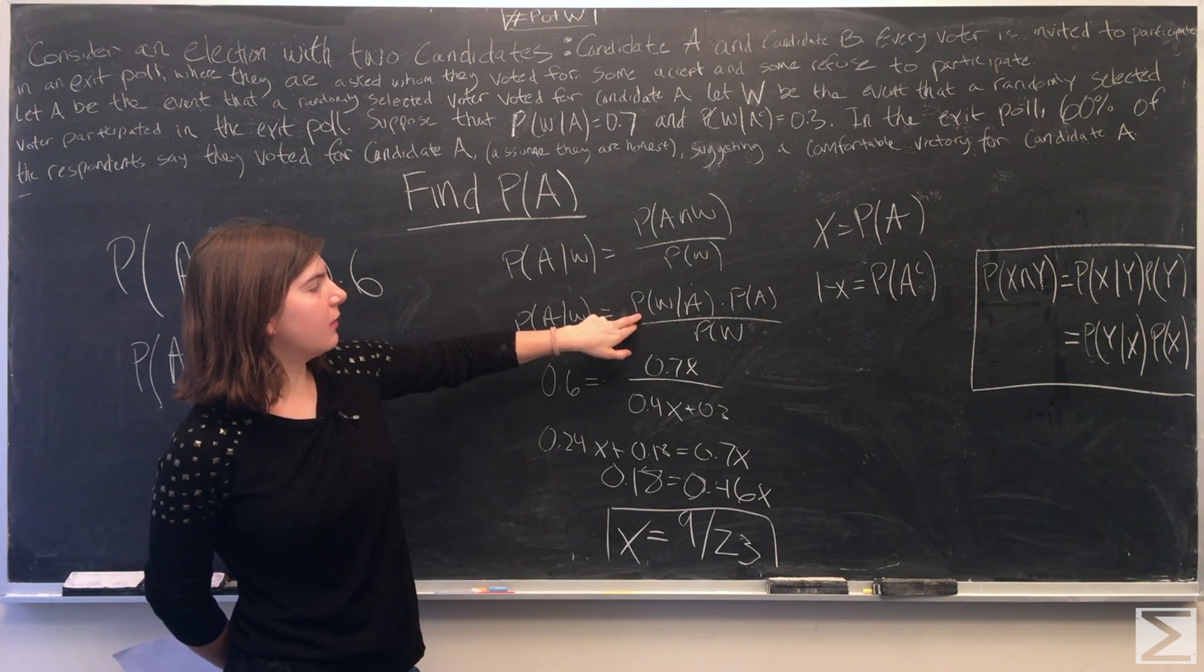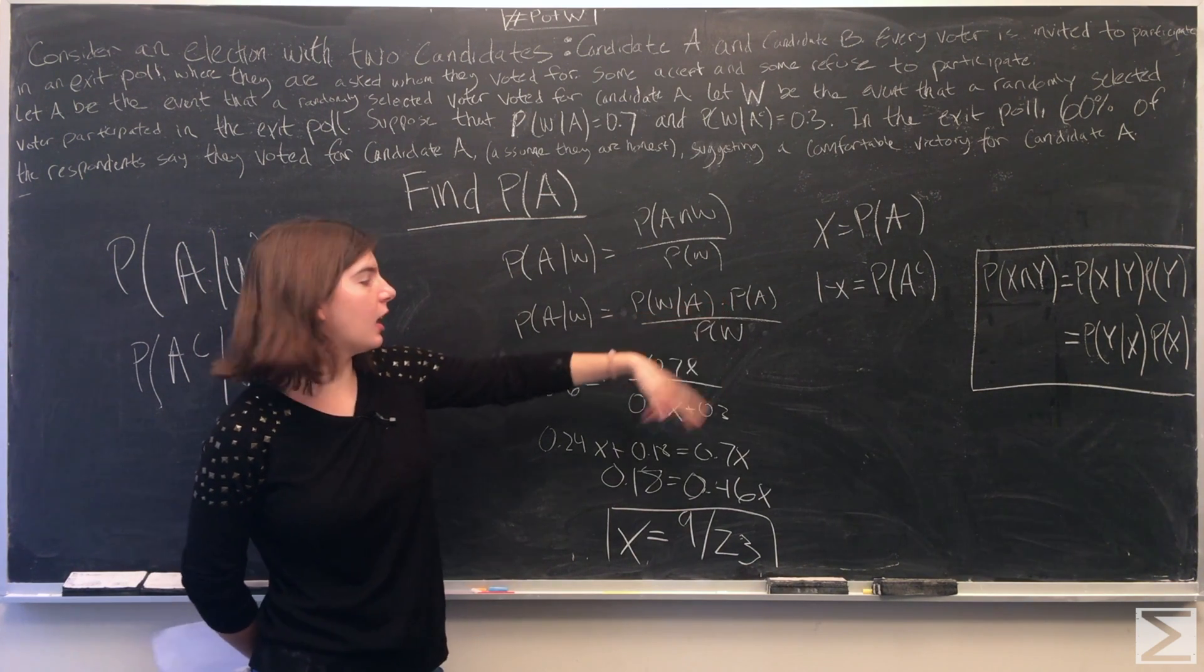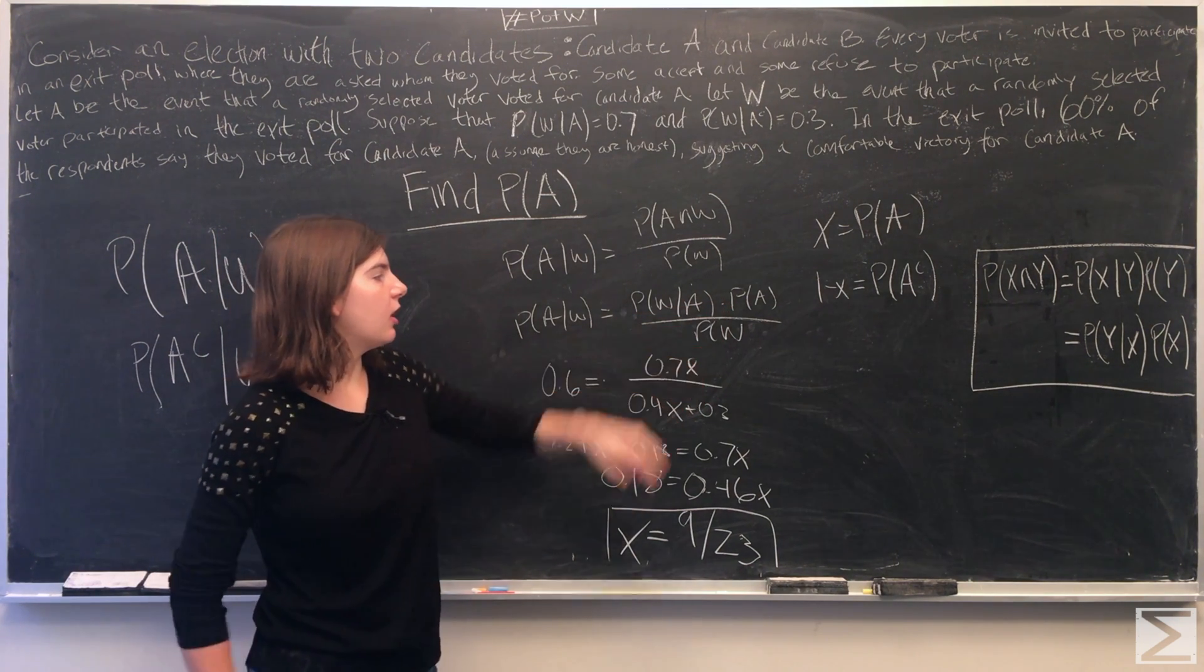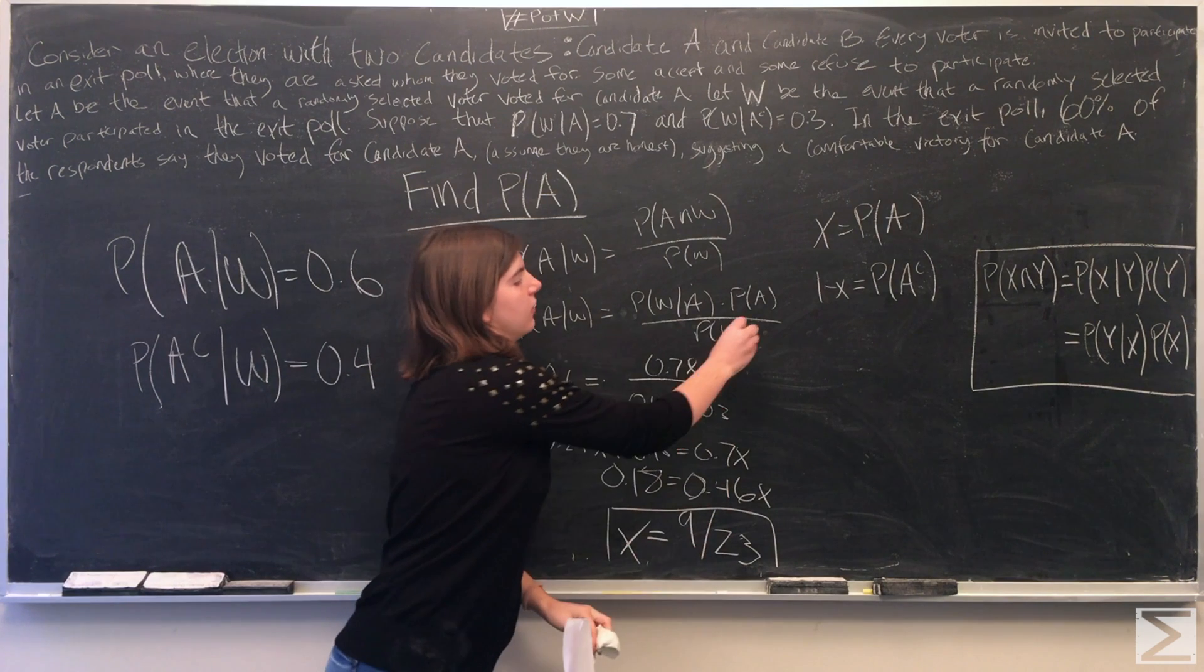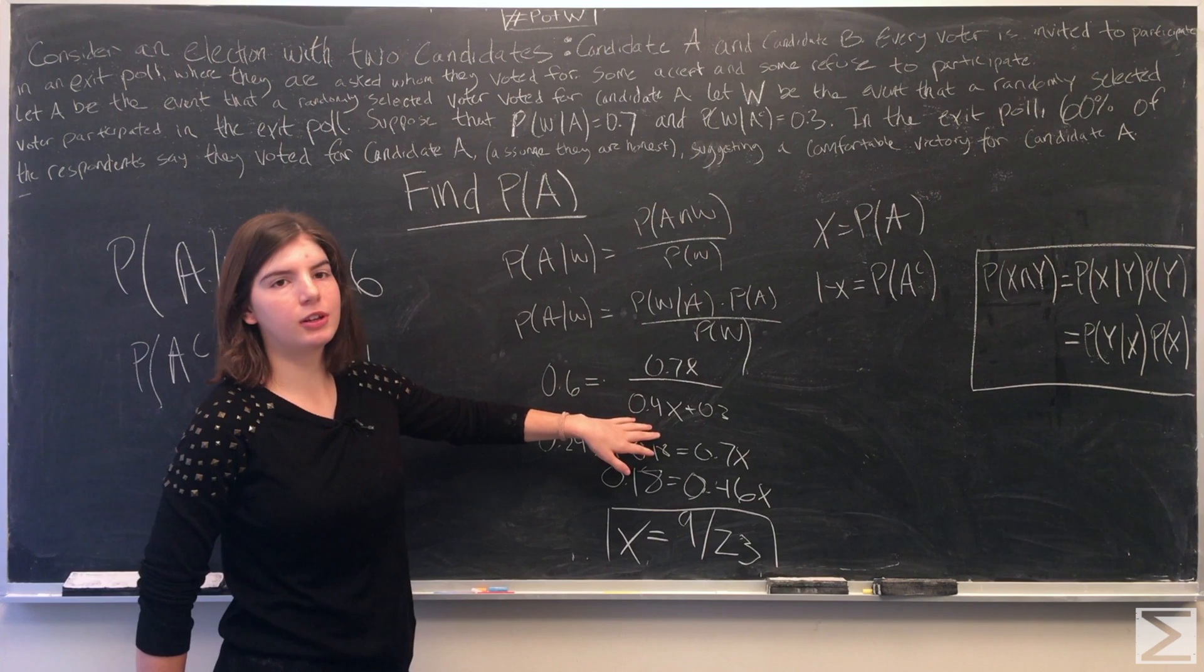We are given the probability of W given A is 0.7. We said that the probability of A is X, and we found the probability of W earlier, 0.4X plus 0.3.